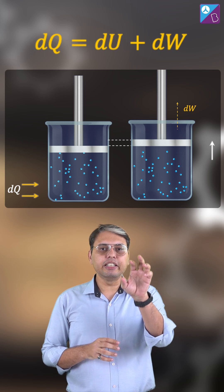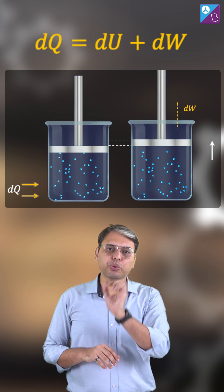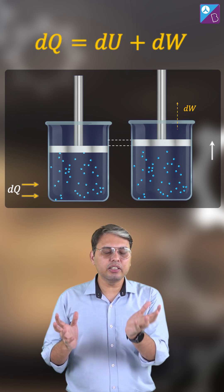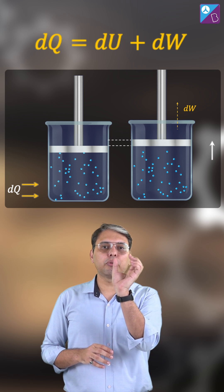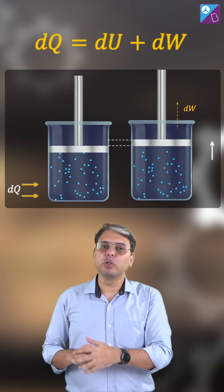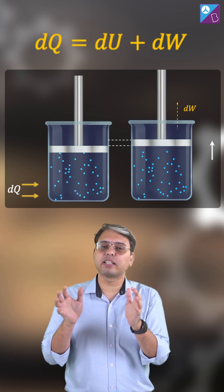So if dQ is the heat supplied to the system, part of it, dU, would be stored as internal energy of the system and some part of that dQ in the form of work done, dW, would be done as work by the system on the surroundings.